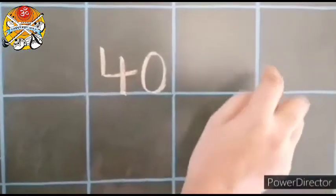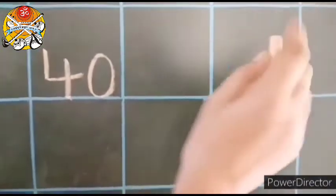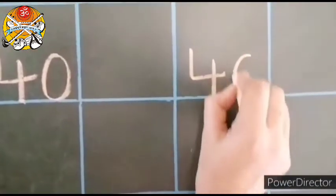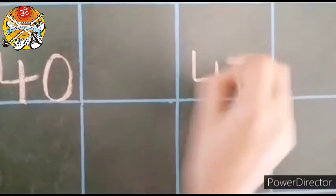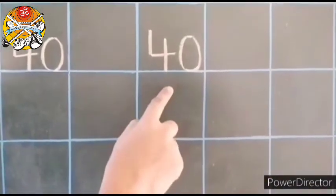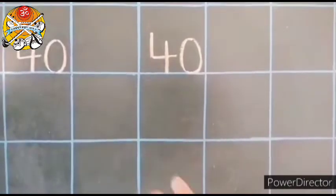One more time I will show you. Leave one box and we will write in the next box. 4, 0, 40. So children in this way you have to write in your notebook. Now let's do an activity.